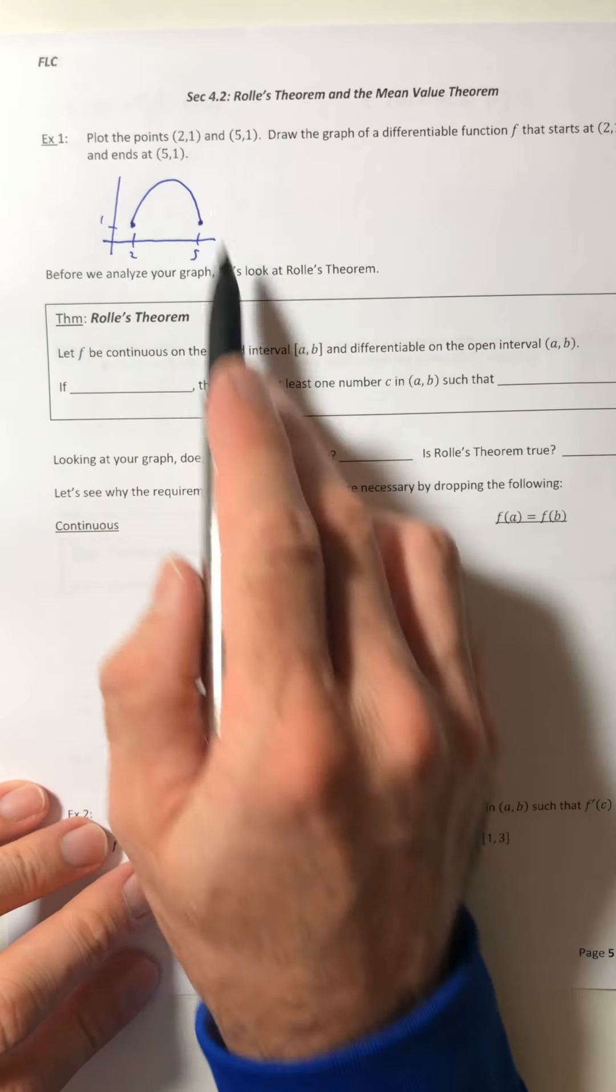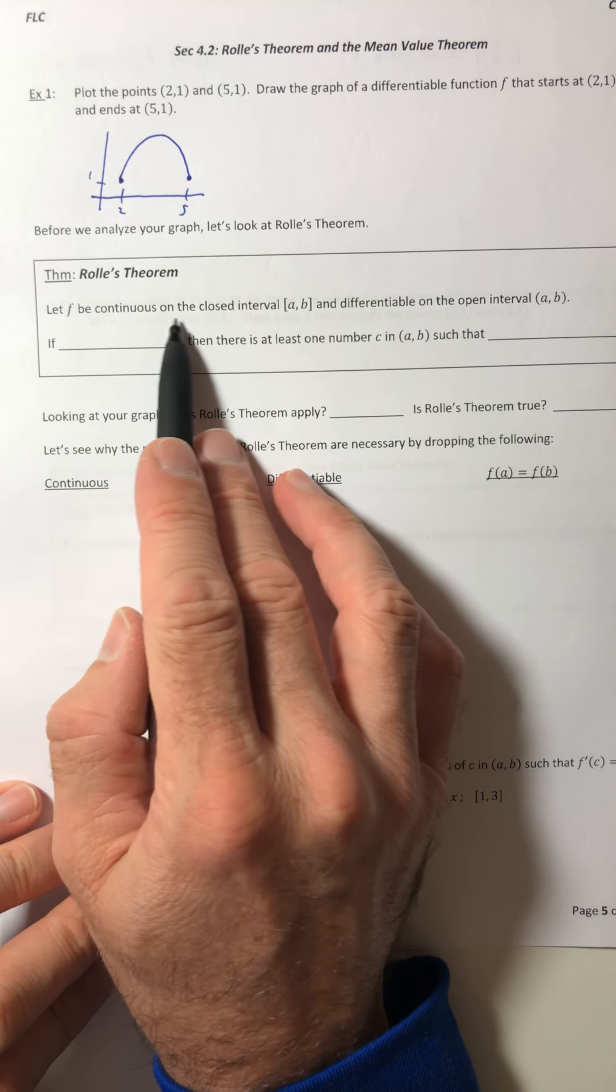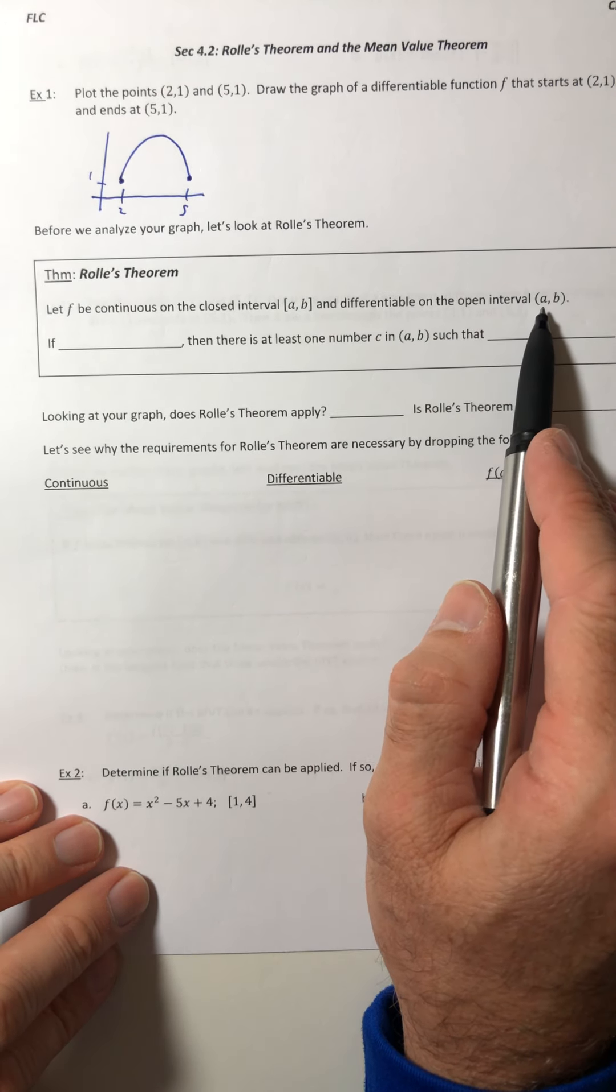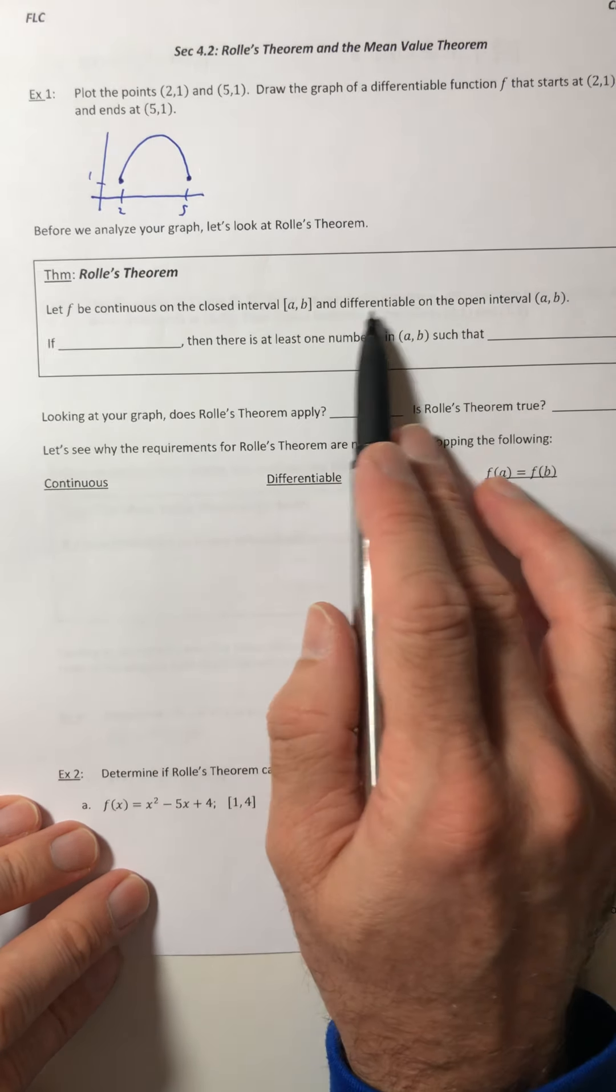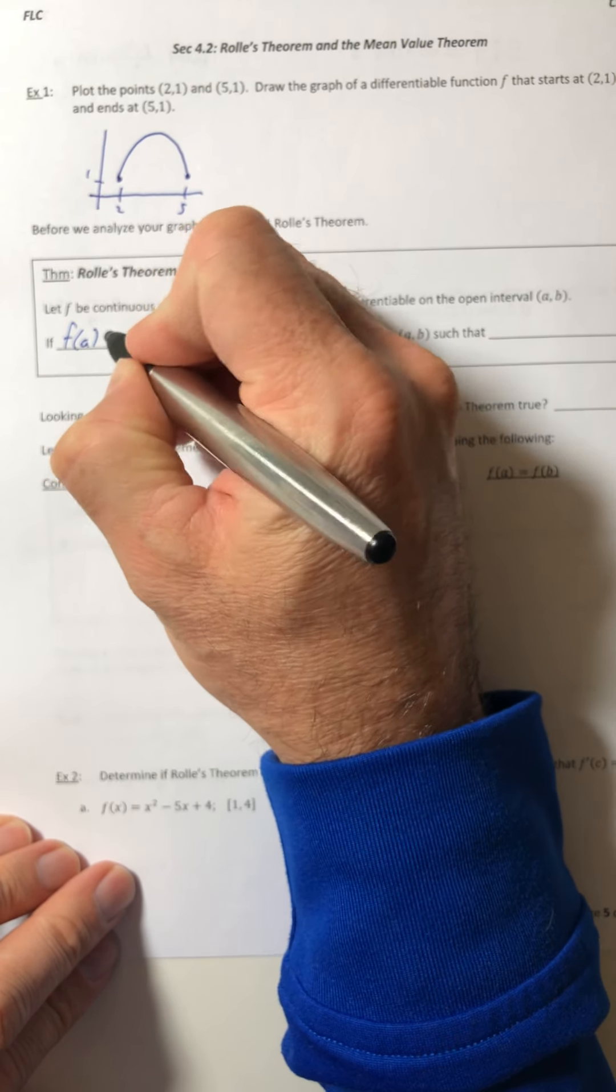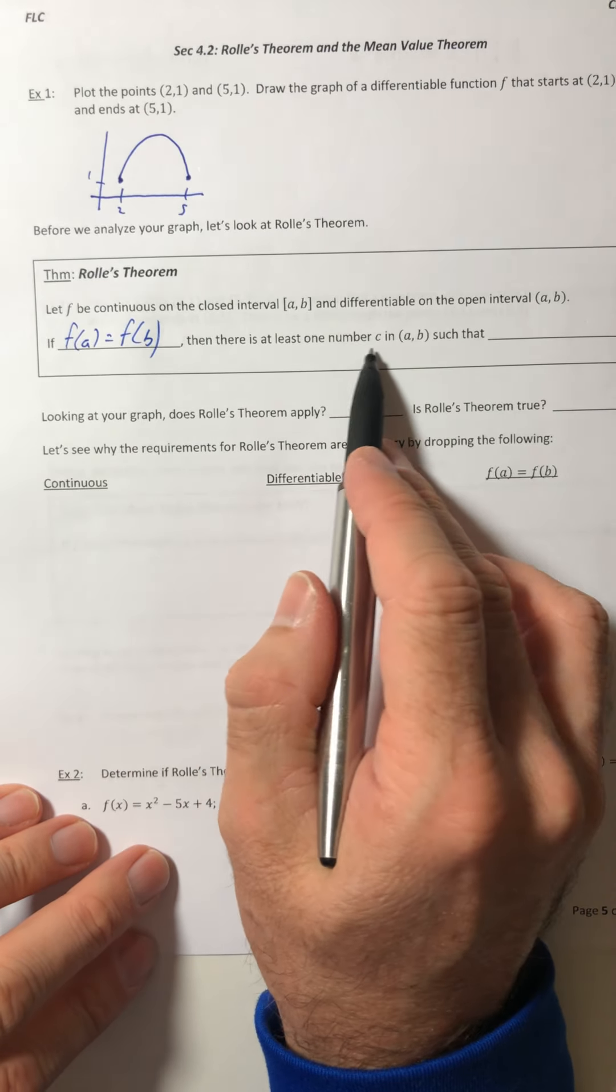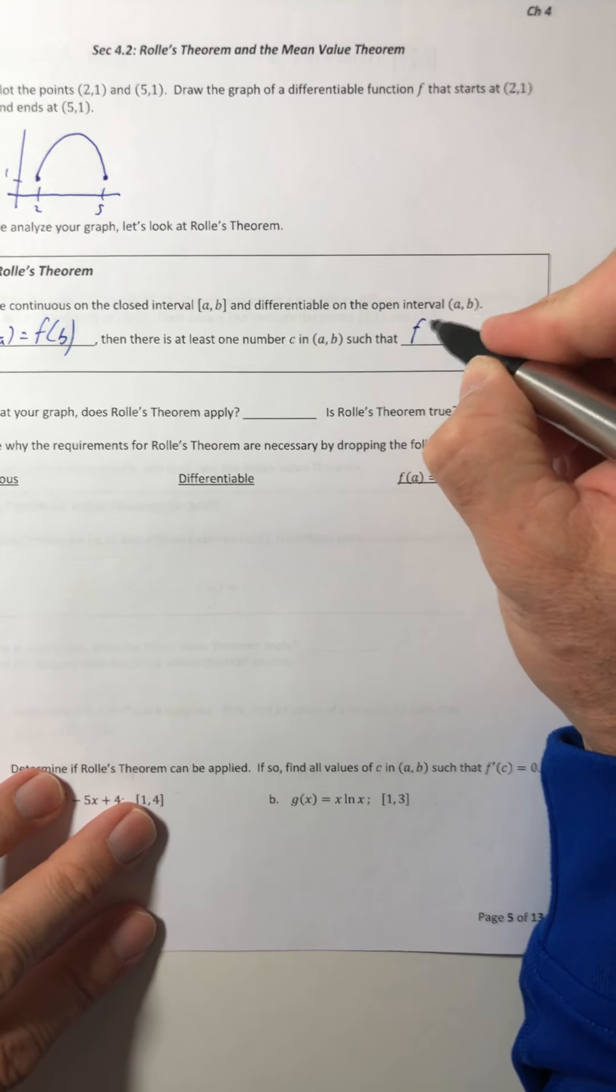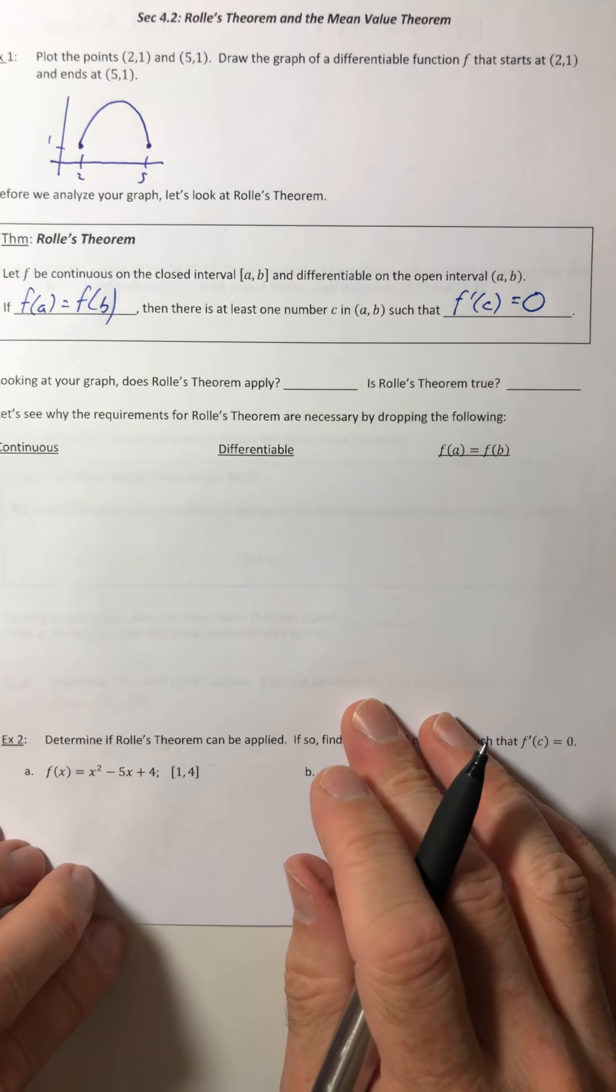Okay, so before we look at what we drew, let's look at what the theorem says. The theorem says, let f be continuous on the closed interval [a,b] and differentiable on the open interval (a,b). So for differentiable, the a and the b are not included. Continuous it is, but not differentiable. So if f(a) equals f(b), then there's at least one number c in the open interval (a,b) such that f'(c) is equal to 0.